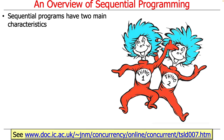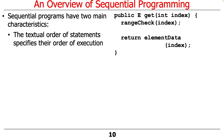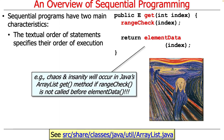There are two main characteristics of sequential programs. The first is that the textual order of statements specifies their order of execution. Here's a simple example: this is an implementation of the get method in Java ArrayList. It's going to first range check the index to make sure it's in bounds, and then it's going to return the item at the index location into element data. Chaos and insanity will occur if for some reason this sequence gets swapped — because you'd grab data that might be out of range of the index.